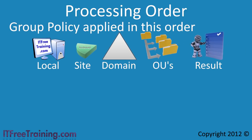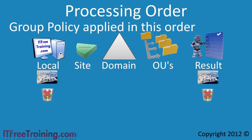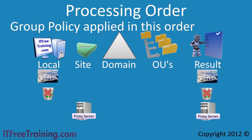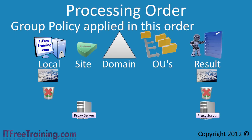Let us go through an example to understand how this works. In this example, the local group policy has been configured to apply custom desktop wallpaper and remove the recycle bin from the desktop. Since no other group policy has been configured in the domain, these two group policy settings will be applied. If a group policy is added at the site level to configure a proxy server, this will then be added to the result. The two settings from local group policy will still apply, as the setting added from the site level group policy does not overlap. It is rare for group policy to be applied at the site level.